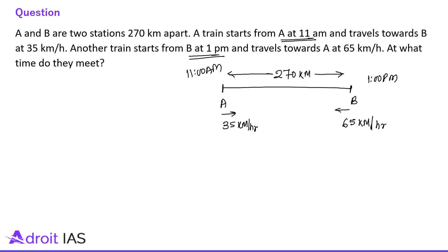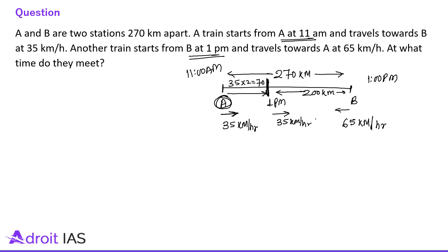From 11 AM to 1 PM, only one train is moving — the one starting from A. In those 2 hours it covers 35 multiplied by 2 = 70 km. So till 1 PM this train covers 70 km. The distance left is 200 km. At 1 PM, one train is moving from that point towards B at 35 km per hour, and the other is moving from B towards A at 65 km per hour.